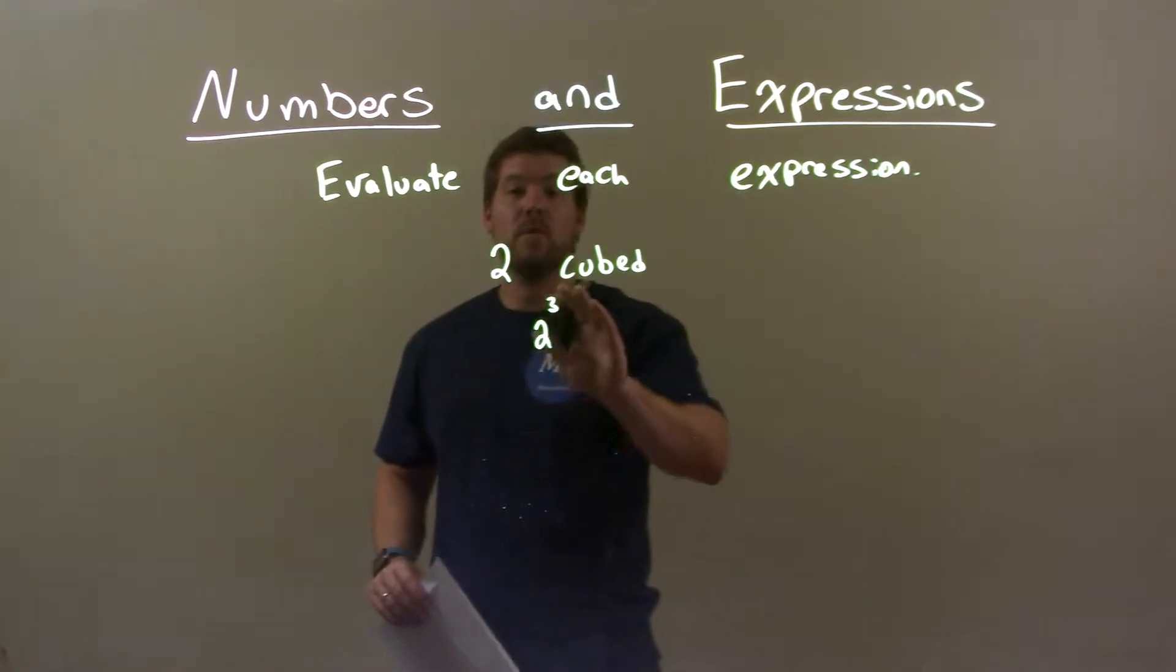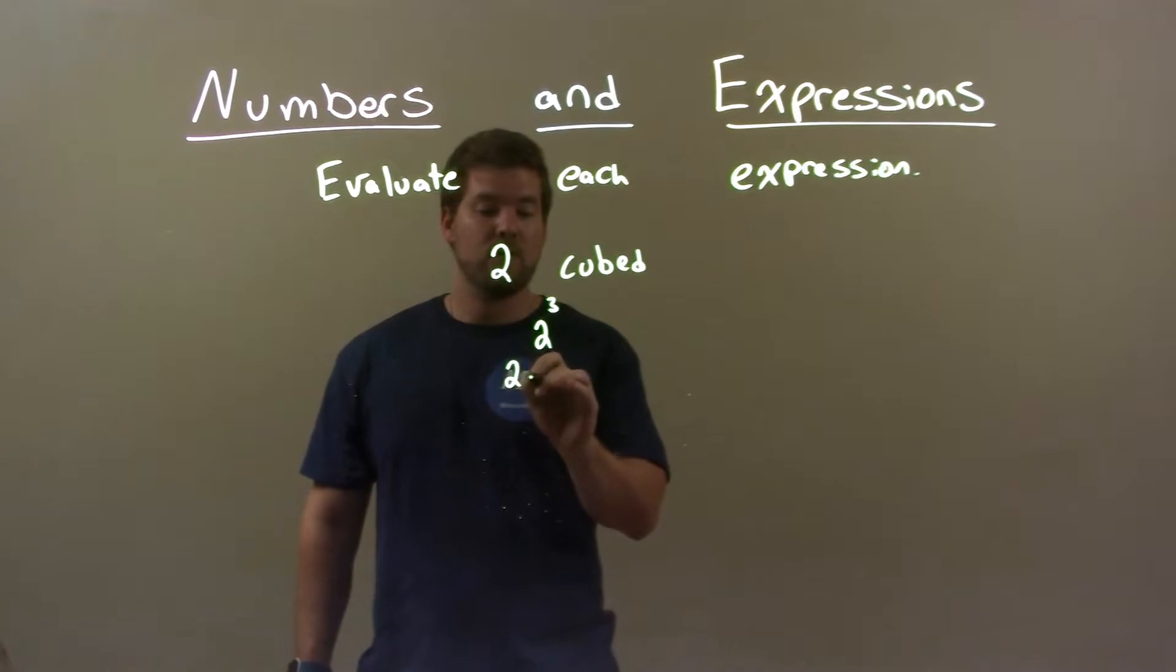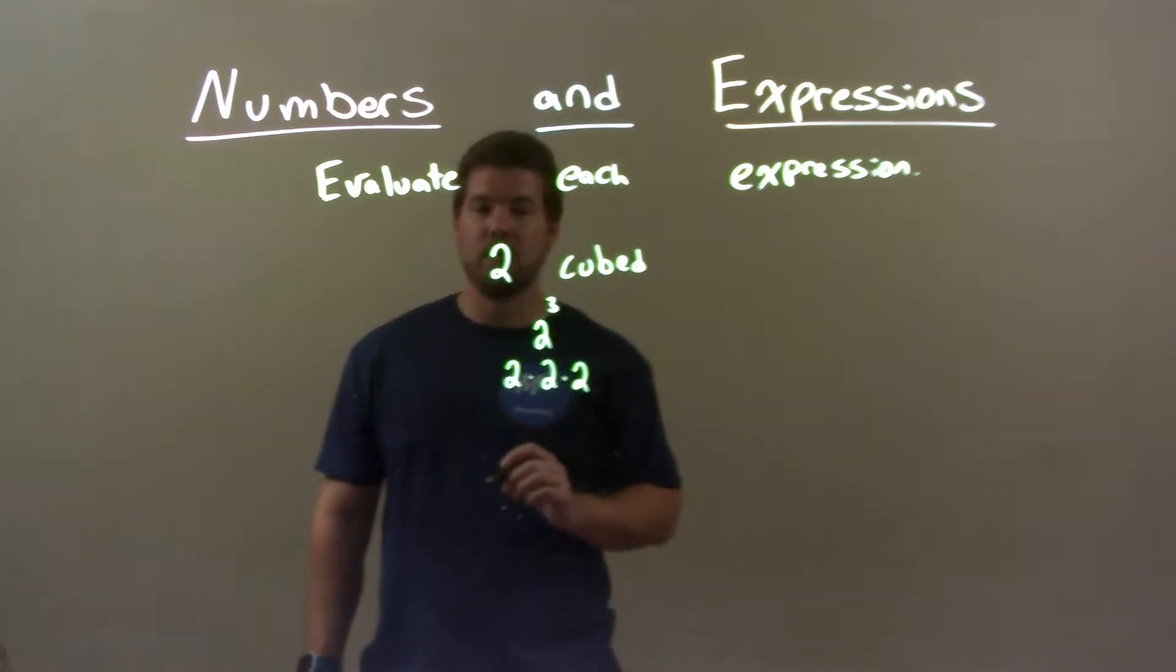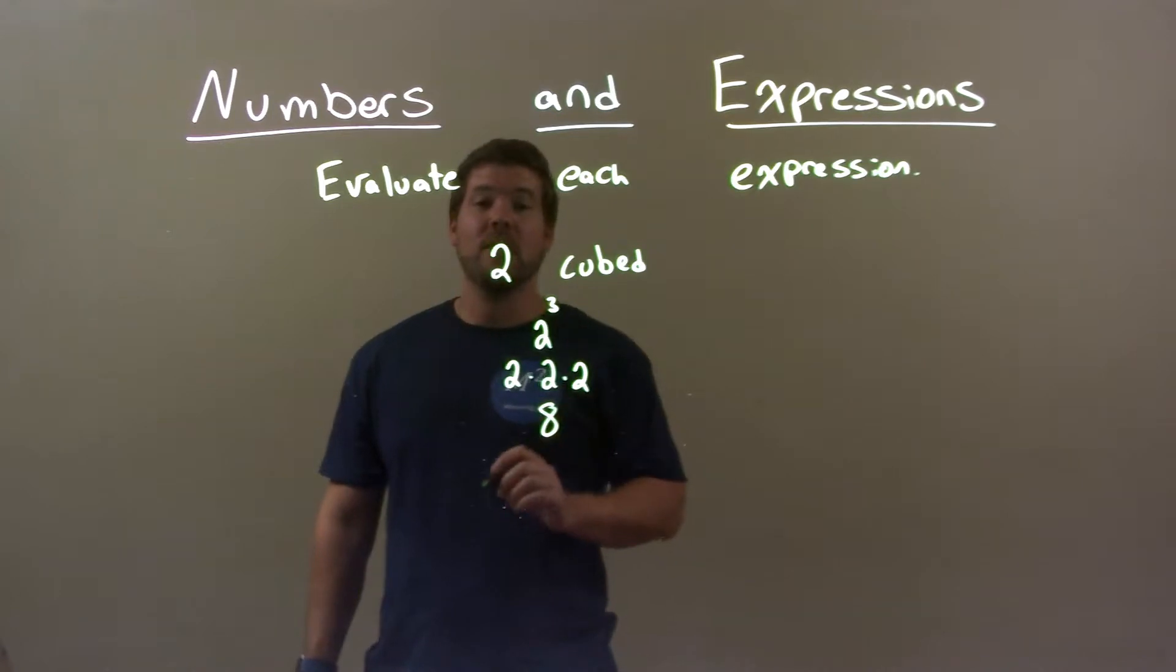If 2 cubed is 2 to the 3rd power, well, 2 to the 3rd power really means 2 times 2 times 2. That's what it means to the 3rd power—three 2's being multiplied together. Well, 2 times 2 is 4 times another 2 is 8. So we have a final answer of just 8 right here.